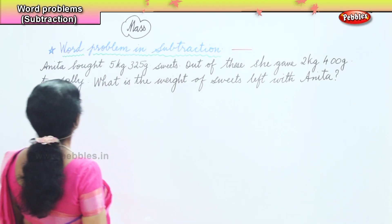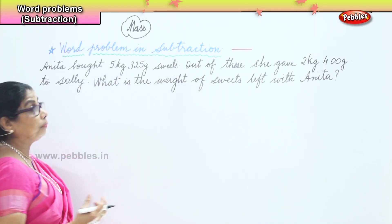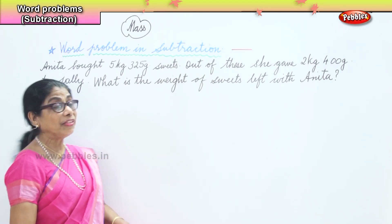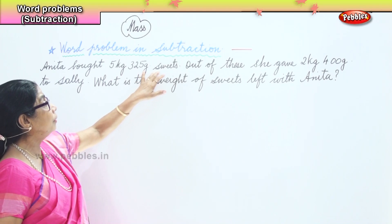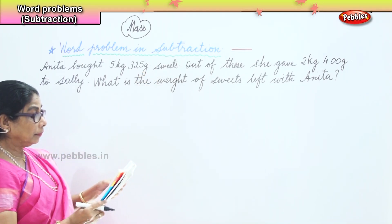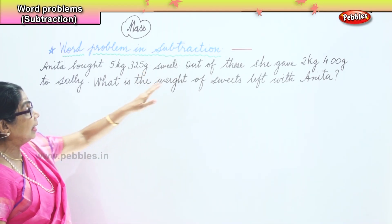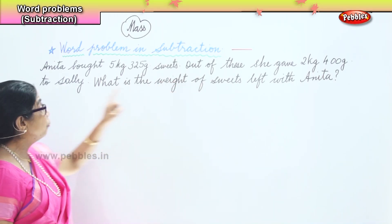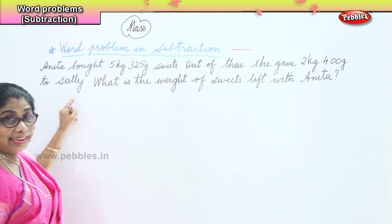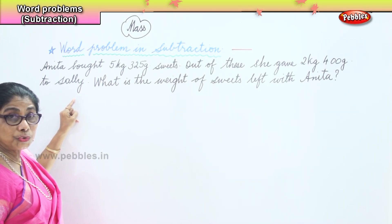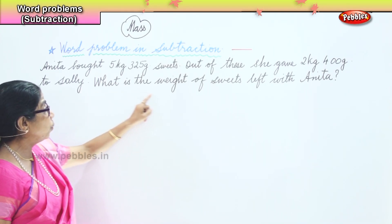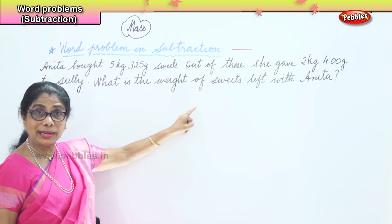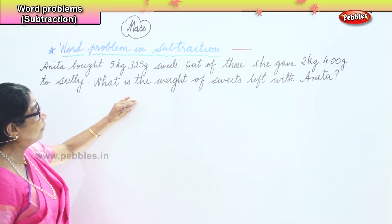The first thing is we have to read the problem. Anita bought 5 kg 325 grams of sweets. Then out of these, she gave 2 kg 400 grams to Sally. The question asks us to find: what is the weight of sweets left with Anita?